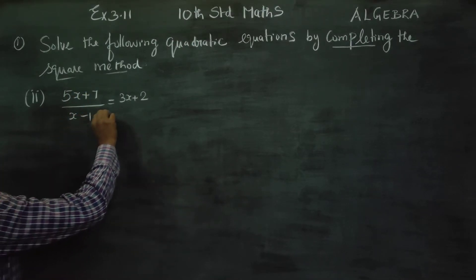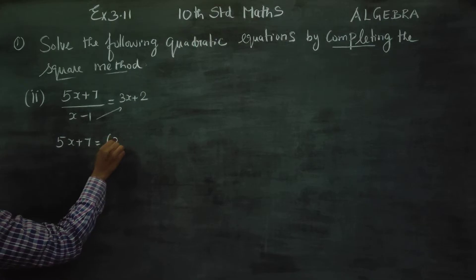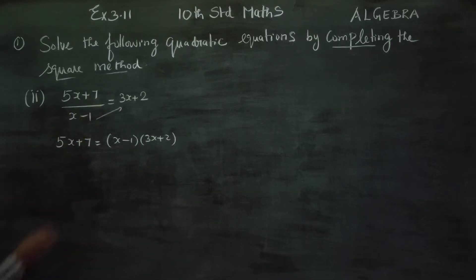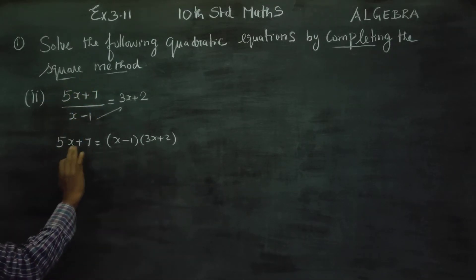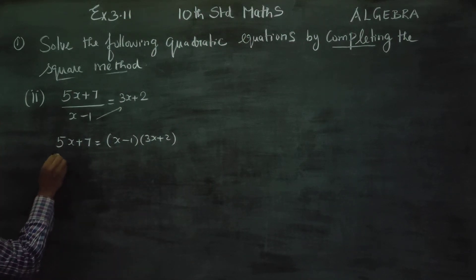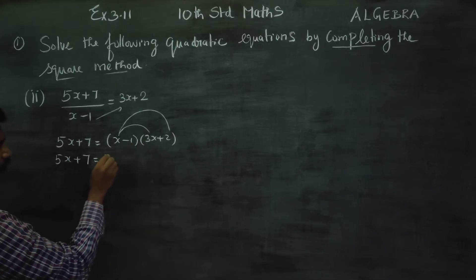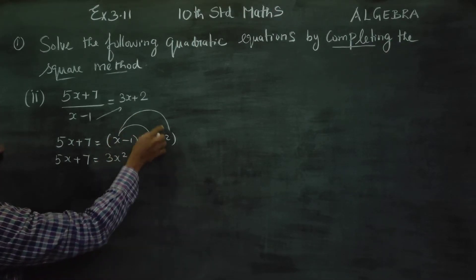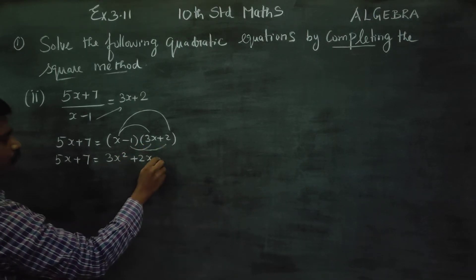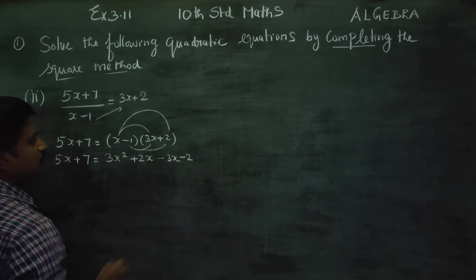How to do this? First, cross multiply: 5x plus 7 is equal to (x minus 1) into (3x plus 2) — cross multiplication. In the completing square method, it is a quadratic equation. So: x into 3x is 3x squared, x into 2 is 2x, minus 1 into 3x is minus 3x, minus 1 into 2 is minus 2.